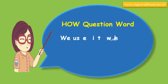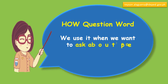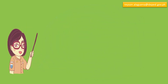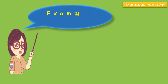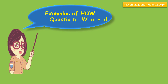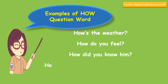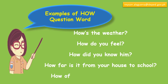The question word 'how' — we use it when we want to ask about people, events, and the way these things are done. Examples: How's the weather? How do you feel? How did you know him? How far is it from your house to school? How often do you go to the church?